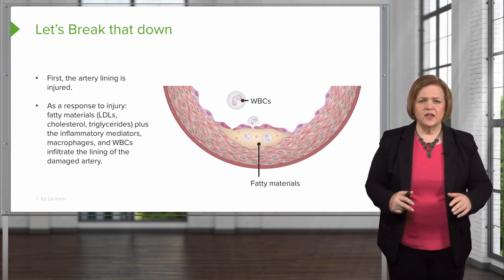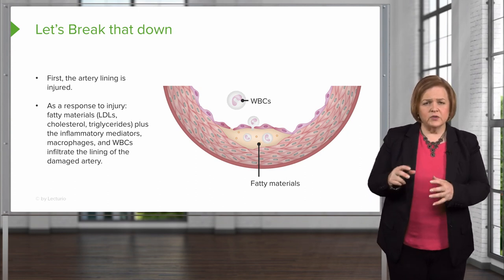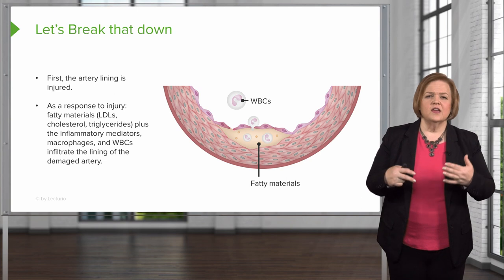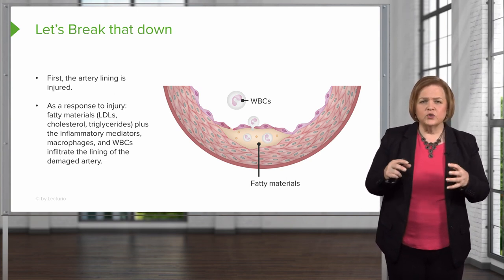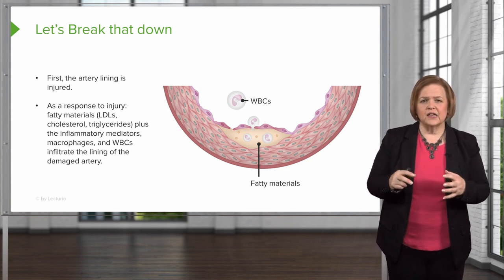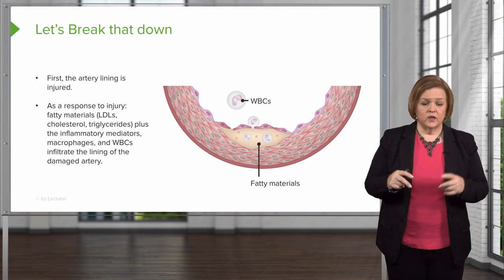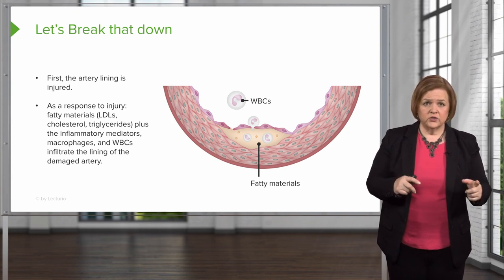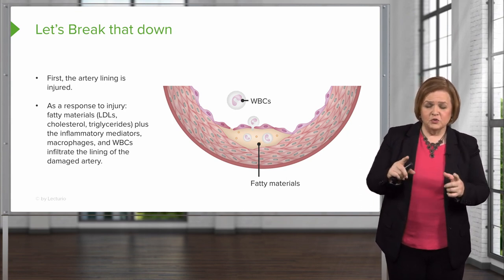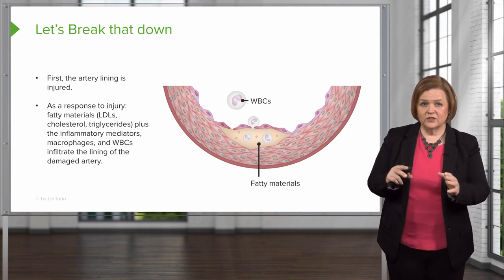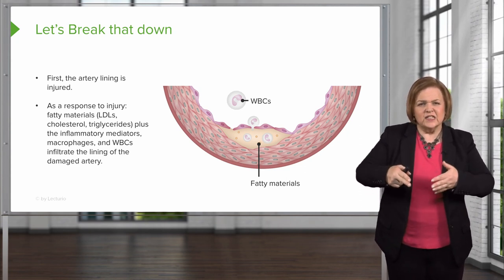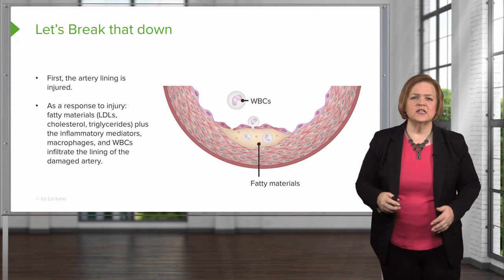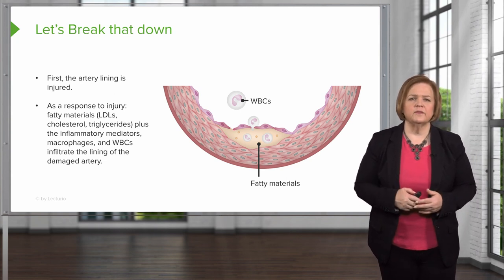So the fatty materials and the inflammatory mediators — the macrophages, the white cells — they all infiltrate the lining of the damaged artery. So what are the two groups that respond? The fatty materials and the inflammatory mediators, and they infiltrate into the lining of the damaged artery.